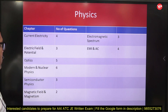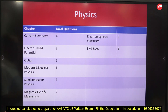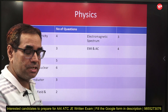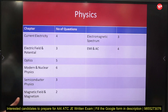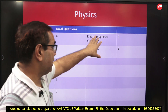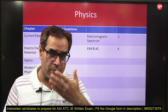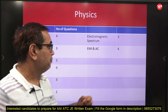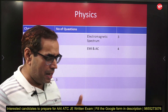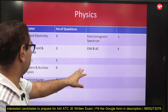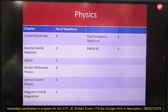From the previously conducted paper, here is the topic-wise distribution: Current Electricity — 4 questions; Electric Field and Potential — 3 questions; Optics — 5 questions; Modern Physics and Nuclear Physics — 6 questions; Semiconductor Physics — 3 questions; Magnetic Field and Magnetism — 2 questions; Electromagnetic Spectrum — 3 questions; Alternating Current and Electromagnetic Induction — 4 questions.